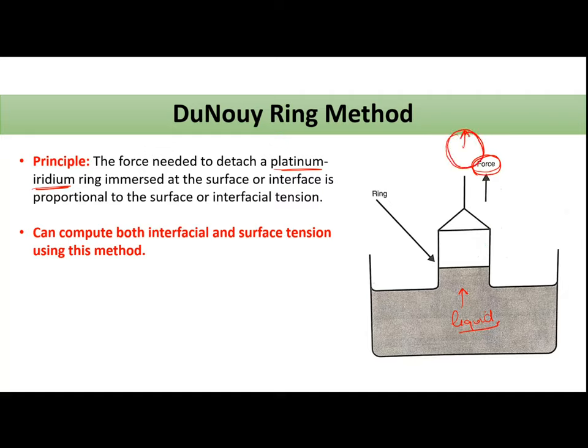And this basically method works on the principle that the force which is required to detach this ring from the liquid surface or interface is directly proportional to your surface tension. So how you calculate basically using this method, you will note down the force. Aapke reading se, dial ki reading se aap note kar loge force required which is exactly equal to the downward pull. Jitna downward pull lag raha hai because of surface tension throughout the circumference of the ring. Ring ki throughout circumference kitna force downward pull lag raha hai, usko aap note down karoge.